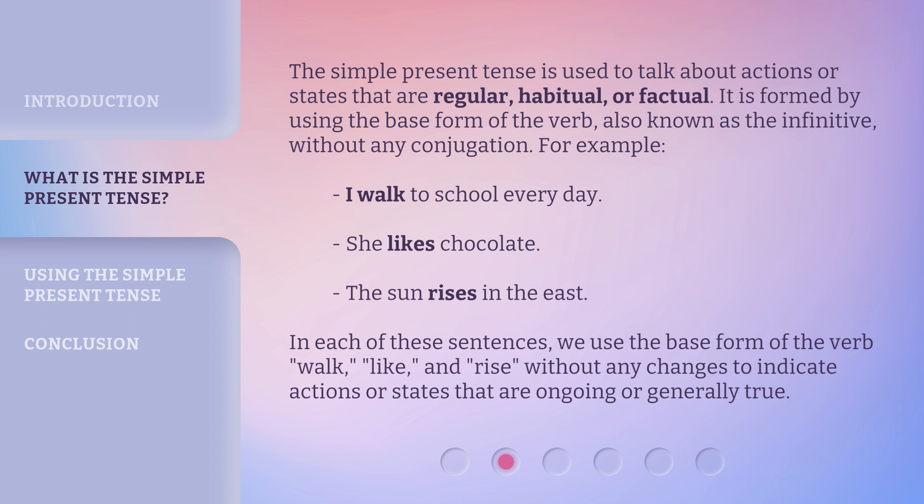In each of these sentences, we use the base form of the verb — walk, like, and rise — without any changes to indicate actions or states that are ongoing or generally true.